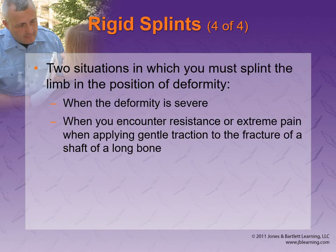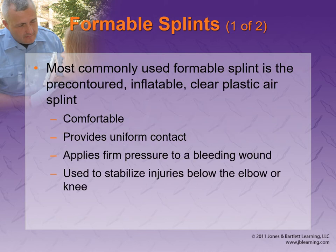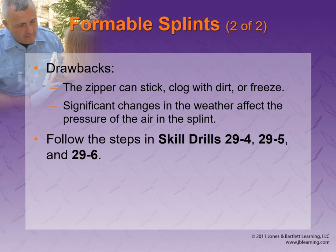Rigid splints — cardboard, balsa wood, SAM splints. The cool thing about SAM splints is you can put creases in them to make them very rigid, or you can actually mold the SAM splint around the injury, which is ideal. There are also formable splints like air splints. Anytime there's a pocket filled with air it can pop, so we have to be careful the zipper is working. Also, if you're at altitude and take a helicopter down, air pressure changes can actually affect the splints.